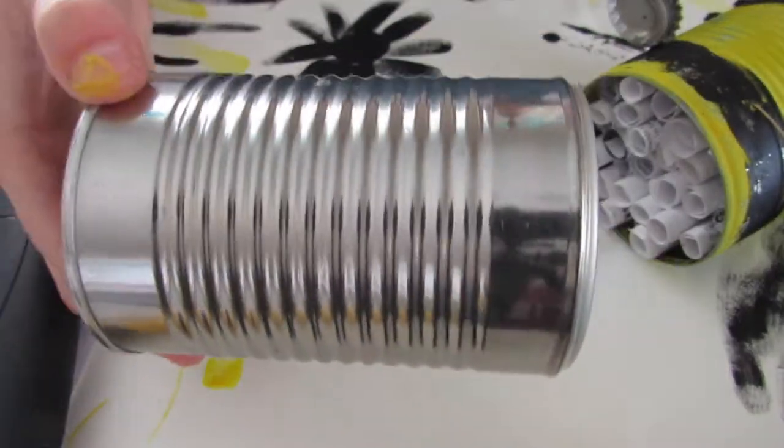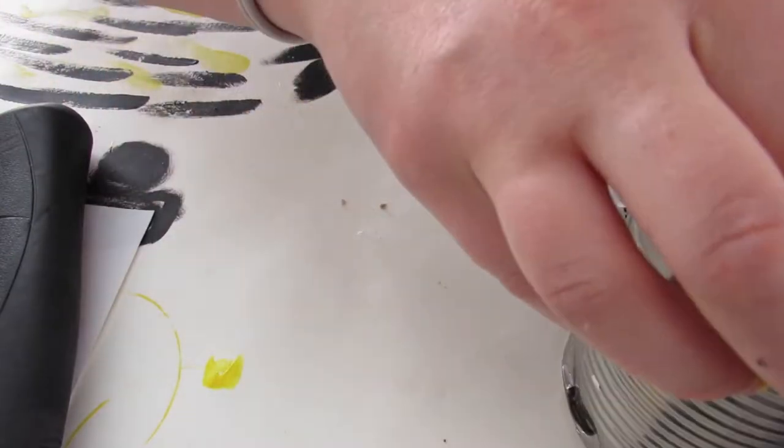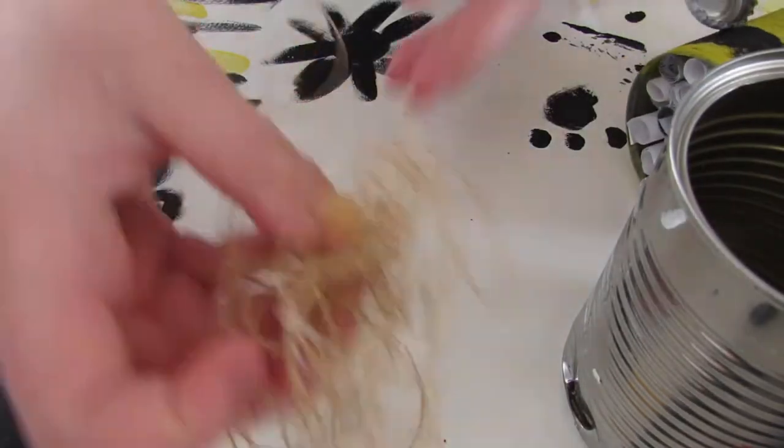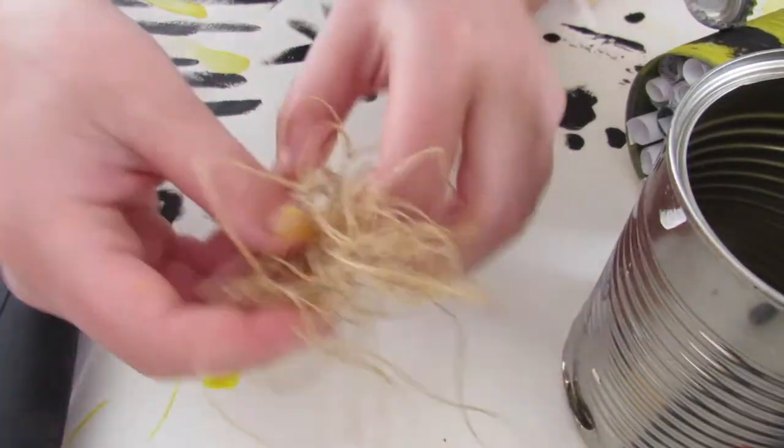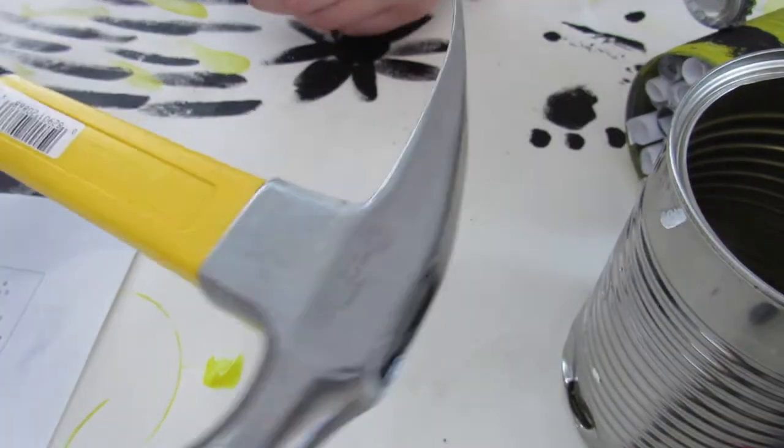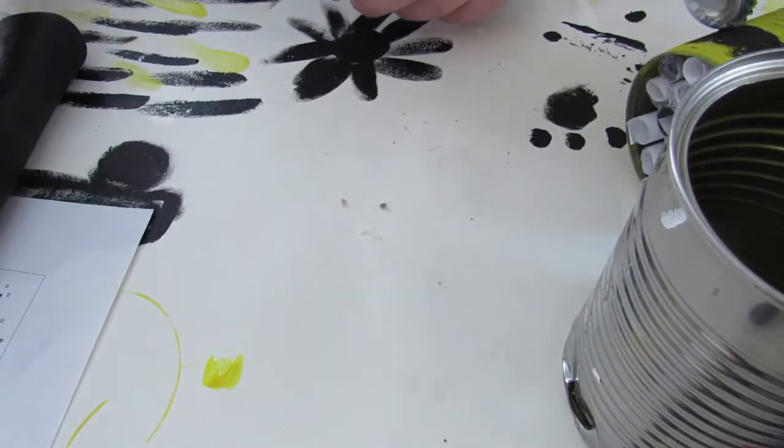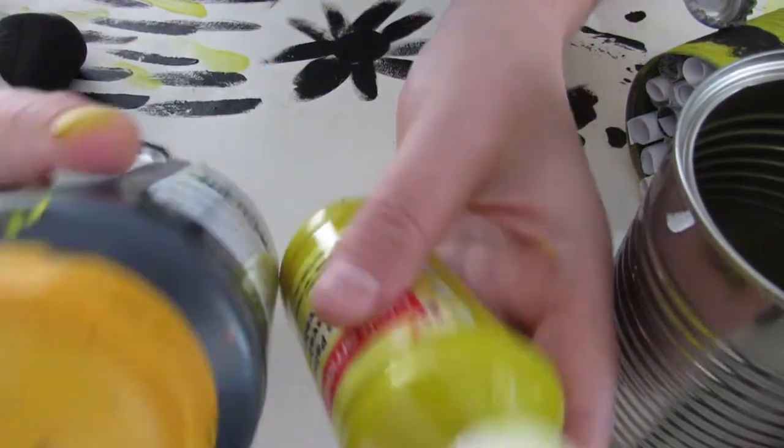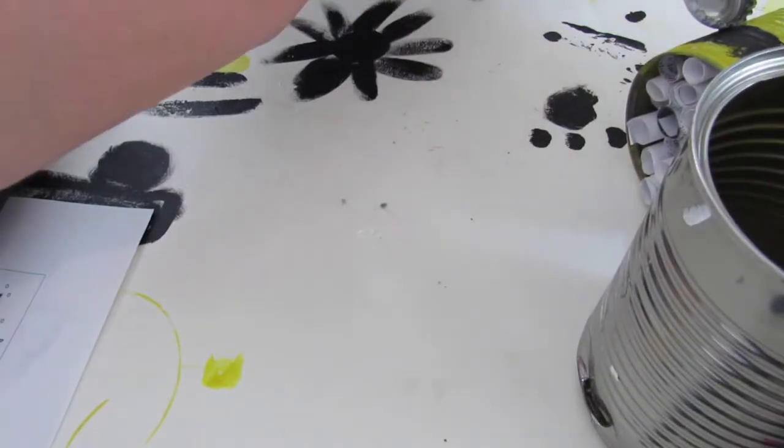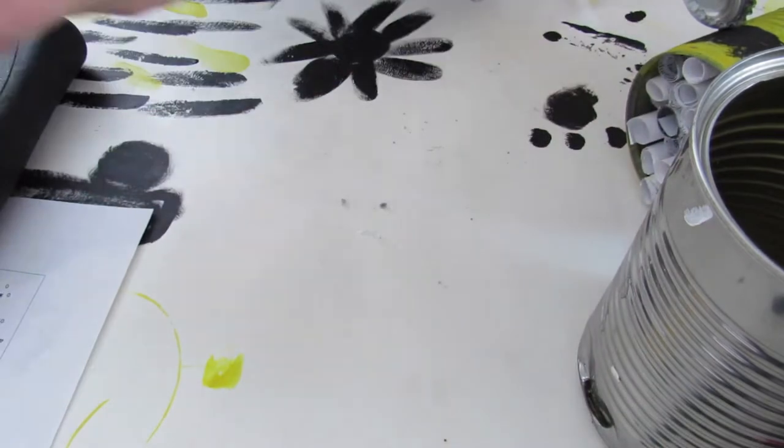Starting off with materials, you're going to need one can. You're going to wash and de-label this can. Then next you're going to have some string, a hammer, a nail or a screw, whatever you have lying around, also some paint and glue, and scissors.